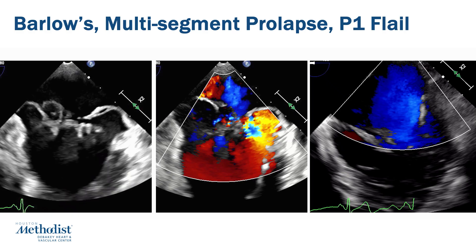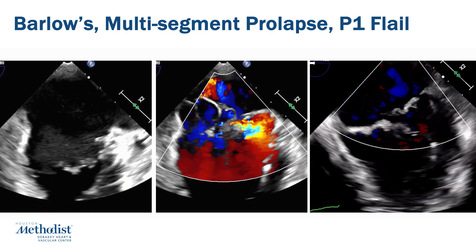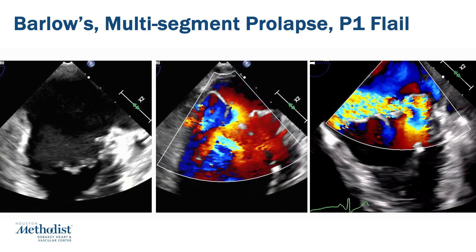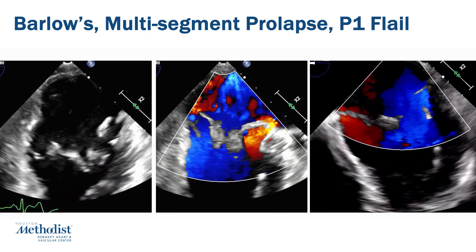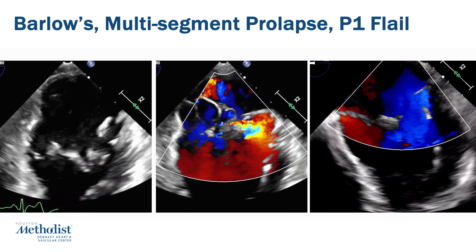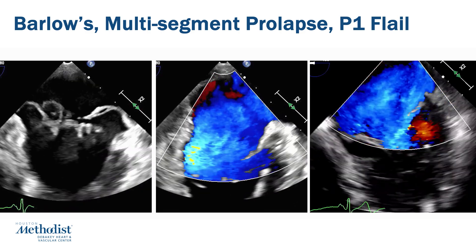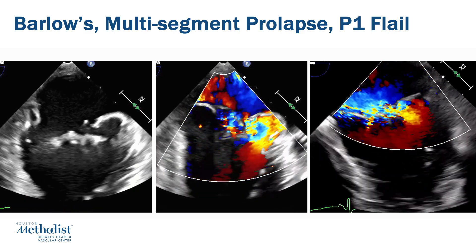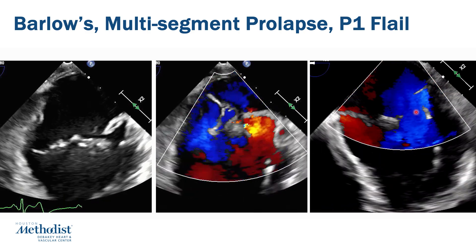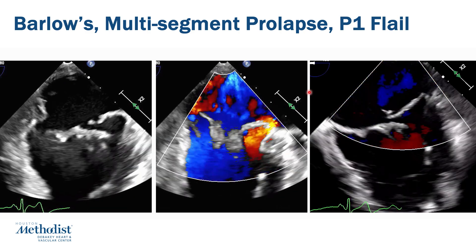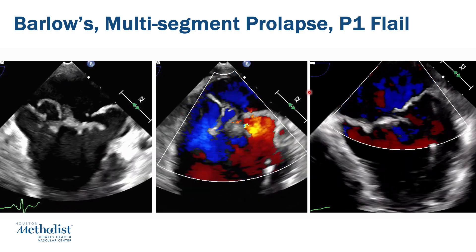Here is the transesophageal echocardiogram with and without color, clearly demonstrating a very degenerated mitral valve with multiple prolapsing segments and a flail in the P1 scallop region of the valve, with very severe eccentric mitral regurgitation directed from the lateral aspect to the medial aspect of the valve. Very severe torrential mitral regurgitation and a very degenerated mitral valve.